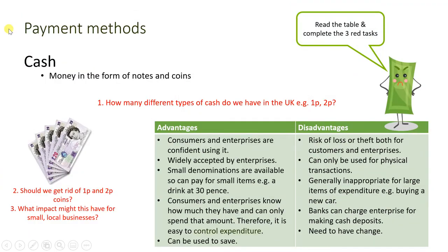The first payment method we're going to look at is cash — money in the form of notes and coins. The first question is straightforward: how many different types of cash do we have in the UK? Write down the notes and coins that we use. It sounds like a simple question, but there's no harm in starting off easy.